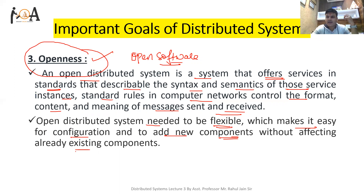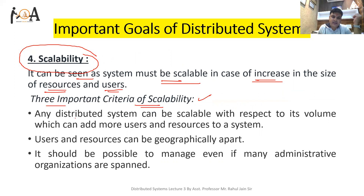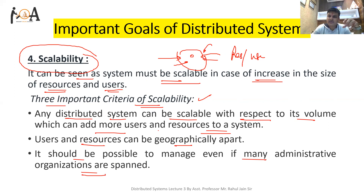Take the example of Linux — it is open software where any user can contribute for the betterment of the software without disturbing existing functionality. The next goal is scalability — the system must be scalable in case of an increase in the size of resources and users. Three important criteria: scalability with respect to volume, meaning more users and resources can be added; geographical scalability, meaning users and resources can be geographically apart; and administrative scalability, meaning it should be manageable even if administrative organizations expand.